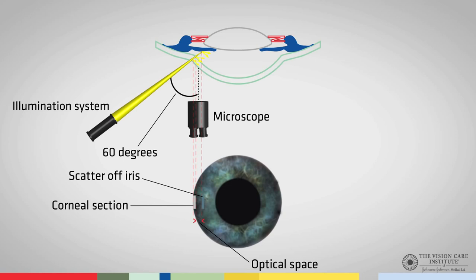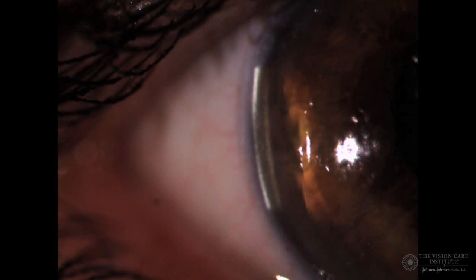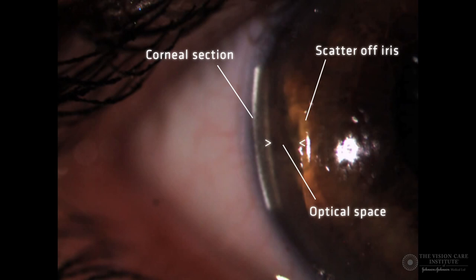The space between the corneal section and the iris scatter represents the aqueous. What we need to do now is compare the thickness of the corneal section to the space between the endothelium of the cornea and the leftmost side of the scatter off the iris. We can see this here on the image itself — the corneal section on the left and the scatter off the iris on the right. We now need to assess how thick the space is relative to the cornea.